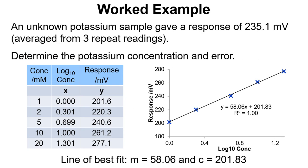So let's take a look at this example. There's some data here, we've got the standards concentrations, we've got the log of those concentrations, and then we've got the probe response in millivolts. We've plotted this out and we get a straight line graph with an intercept.